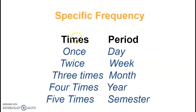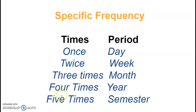Now we have specific frequency. We had general, and now specific. So we have: once, twice, and after three you say three times, four times, five times. Then you combine with a time period: once a day, twice a week, three times a month, four times a year, or five times a semester.